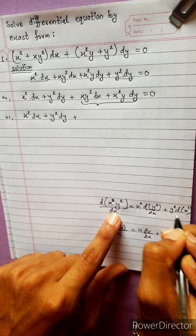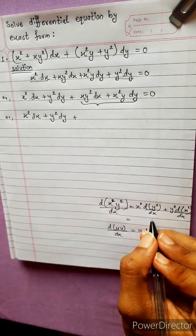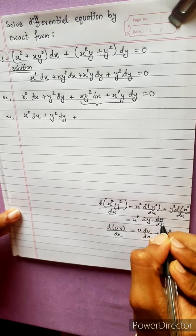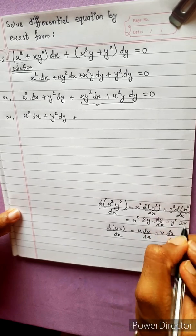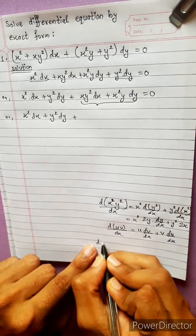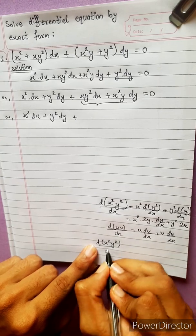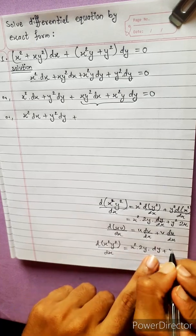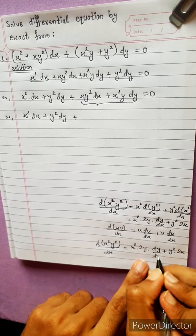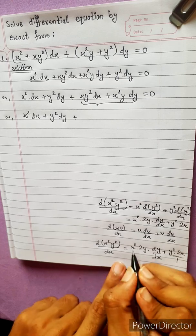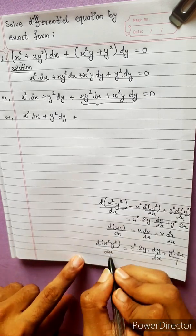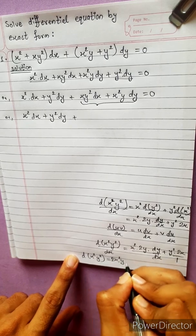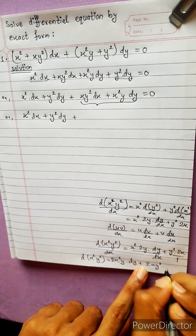The derivative of y squared with respect to x equals 2y into dy/dx plus y squared. And d(x² y²)/dx equals x squared into 2y into dy/dx plus y squared into 2x dx. So y² dx equals 2x²y dy plus 2xy y² dx.